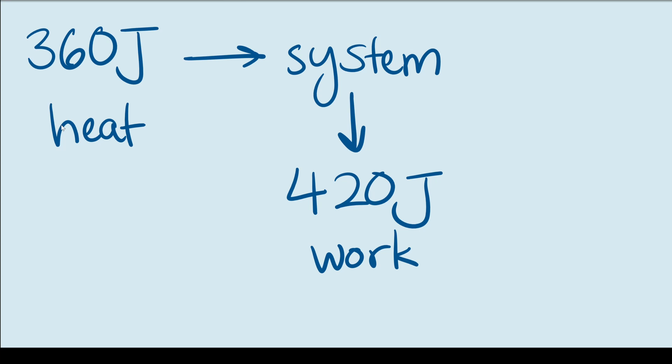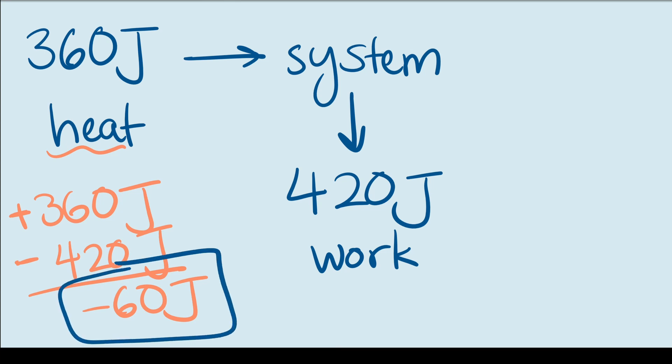Okay, so hopefully by now you've paused the video, you solved it and you have the answer. Let's go through this together. Now let's start off with heat. The system gains 360 joules in heat. So that's positive internal energy. Now it does 420 joules of work and that work is done on the surroundings. So it loses that energy. So if we add these two up, positive 360 minus 420 gives us negative 60 joules. So what does that mean? This system lost energy as a matter of fact and that exact amount was 60 joules.